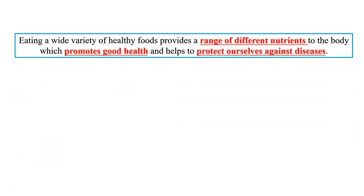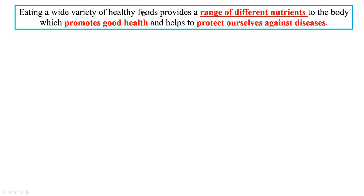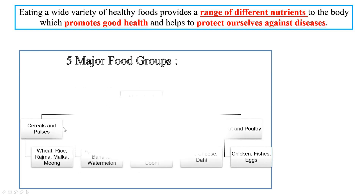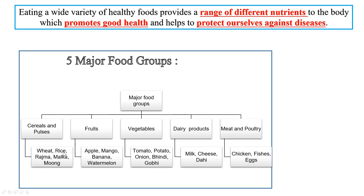Here I should emphasize a very important point — eating a wide variety of healthy foods provides a range of different nutrients to the body, which promotes good health and helps to protect ourselves against diseases. Broadly, there are five major food groups: cereals and pulses such as wheat, rice, rajma, malka, moong; fruits such as apple, mango, banana, watermelon; vegetables such as tomato, potato, onion, bindi, gobhi; dairy products such as milk, cheese, dahi; and meat and poultry products such as chicken, fish and eggs.